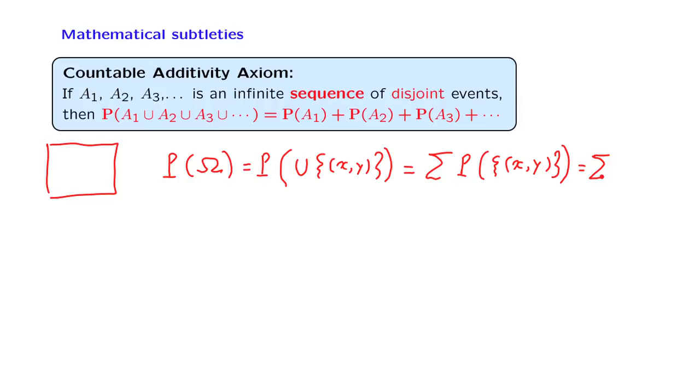Now, as we discussed before, single element subsets have 0 probability, so we have a sum of lots of 0's, and the sum of 0's should be equal to 0.